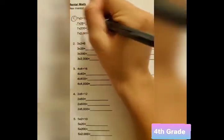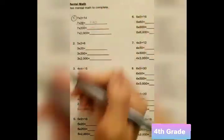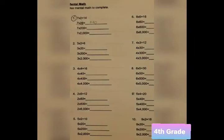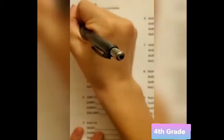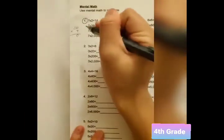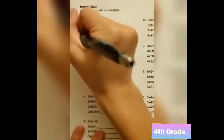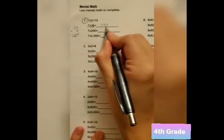So, 7 times 2 is 14. And when we add 0, it's going to be 140. Now, to prove that this is correct, we could do 20 times 7. We could set it up this way. And when we do this, 7 times 0 is 0. 7 times 2 is 14. And we could see that we got the same answer as this one.